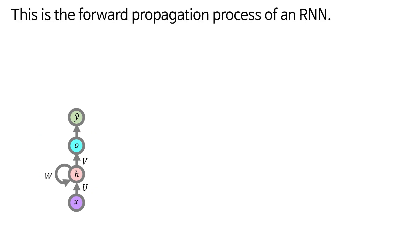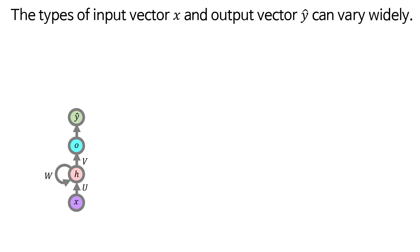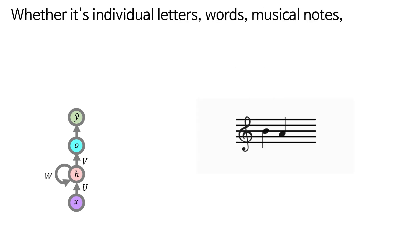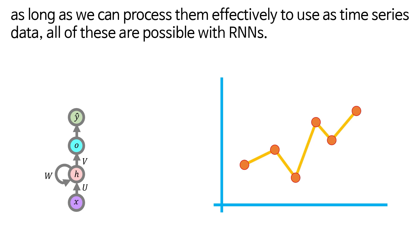This is the forward propagation process of an RNN. The types of input vector x and output vector y hat can vary widely, whether it's individual letters, words, musical notes, or stock price changes. As long as we can process them effectively to use as time series data, all of these are possible with RNNs.